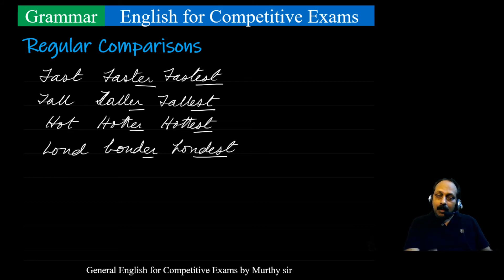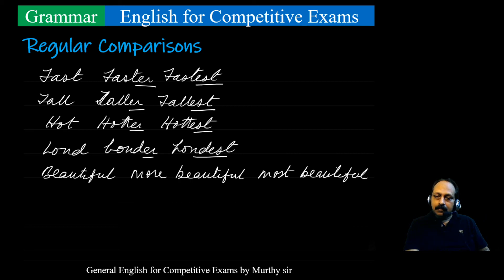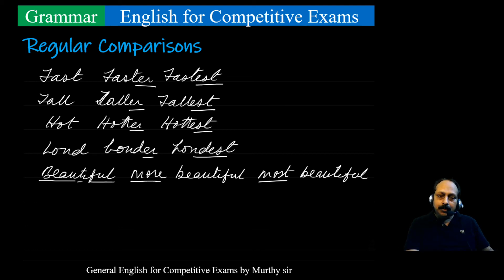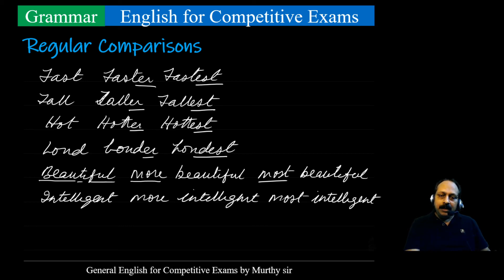But some words have more than one syllable — then how do you change? Beautiful, more beautiful, most beautiful. Beautiful has three syllables, so you cannot add ER or EST; you have to use 'more' and 'most.' Similarly, intelligent — four syllables — more intelligent, most intelligent. No one is going to ask you about these; they are easy to handle.